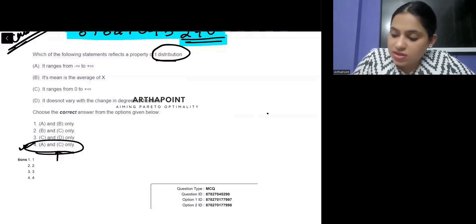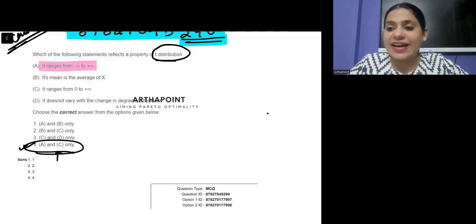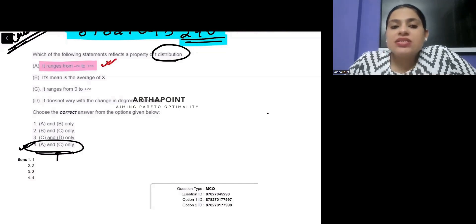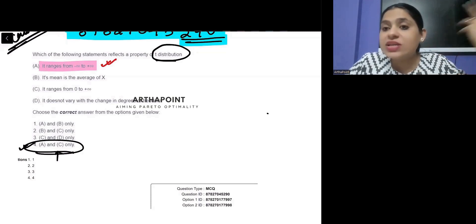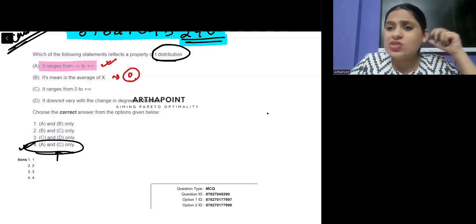Ab dihaan se dekho, this is saying that it ranges from minus infinity to infinity. That is correct actually. It's saying its mean is the average of x. Hame nahi bataya gaya ki x kya hai. And we know that the T distribution's mean is actually averaged around 0. Toh x kya hai is not known to us and this statement does not make sense.